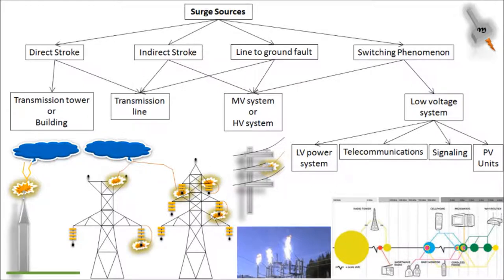In power systems there are four main sources: direct lightning stroke, indirect lightning stroke, line-to-ground fault, and switching phenomena. A direct lightning stroke usually happens when lightning hits a transmission line, a transmission tower, a building, or a tree. An indirect lightning stroke is the after-effect of a direct lightning stroke, where after lightning hits the tower it causes flashover on the string insulator and the surge enters the transmission line.